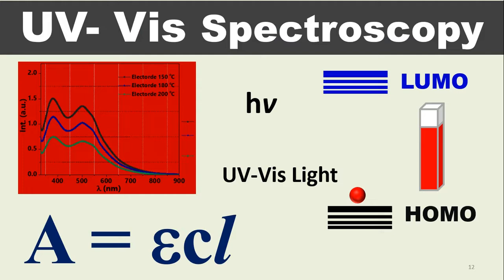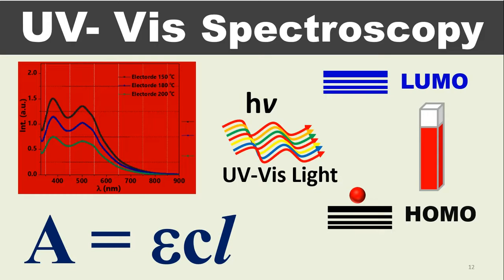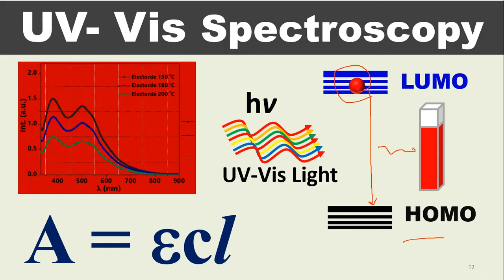When a photon strikes any material, object, or liquid, it basically excites the electron from HOMO to LUMO. This process we call absorption. Now what will happen is this electron will come back again to the ground state or equilibrium and it will emit another photon. This process we call photoluminescence — this emission is caused by the absorption of a photon, which is why it is called photoluminescence.